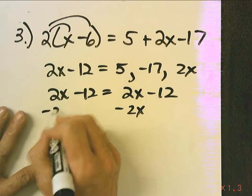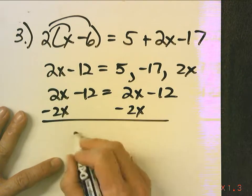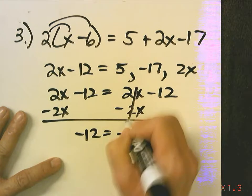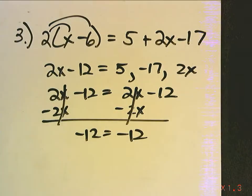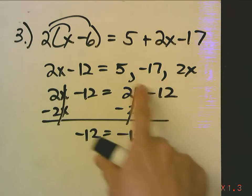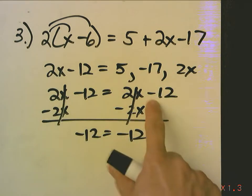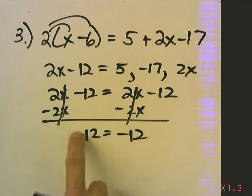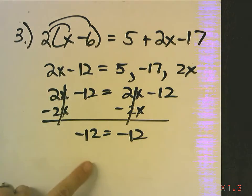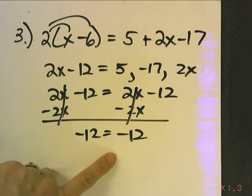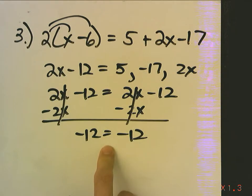Now, I'm going to subtract 2x from both sides. And then I'm like, uh-oh, oh no. I did something wrong. My variable disappeared. So, let me just double check my work. 5 negative 17 is negative 12, 2x. Wow, my variable disappeared. I wonder what that means. Well, when your variable disappears, you decide, did I end up with a true statement or a false statement? Well, negative 12 does equal negative 12. That is true.